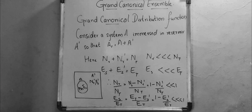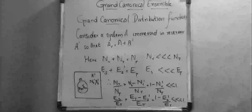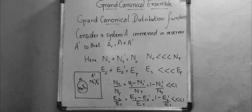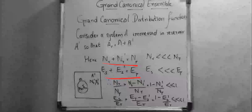This composite system is isolated, so that at any time A has energy E_S and number of particles N_R, and the reservoir has energy E_S' and number of particles N_R', such that N_R plus N_R' equals N_total, with N_R much less than N_T and E_S much less than E_T. Therefore N_R / N_T equals (N_T minus N_R') / N_T.